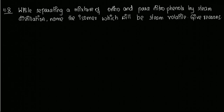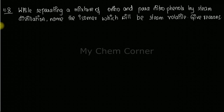Hello everyone, welcome back to my Chem Corner. In today's video we're doing question 11.8 from alcohols, phenols and ethers. The question says: while separating a mixture of ortho and para-nitrophenols by steam distillation, name the isomer which will be steam volatile and give reasons.